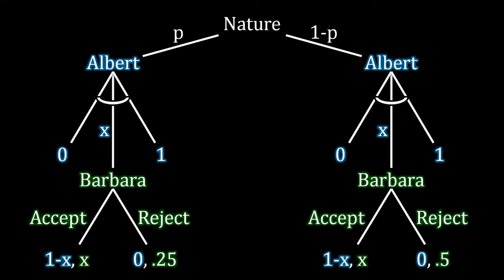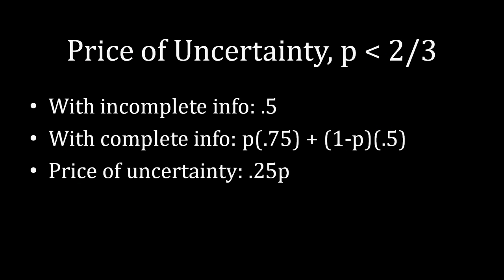We can compare Albert's utility here to his utility in the previous game. There are two different cases to consider, because in the previous game Albert's optimal strategy depended upon P. With incomplete information when P is less than 2/3, Albert is under the impression that Barbara is sufficiently likely to be the strong type, so he makes the safe offer of giving Barbara 1/2, and both the strong type and weak type of Barbara accept that offer. Albert, with certainty, receives a payoff of 1/2 regardless of whether Barbara is the weak or strong type.